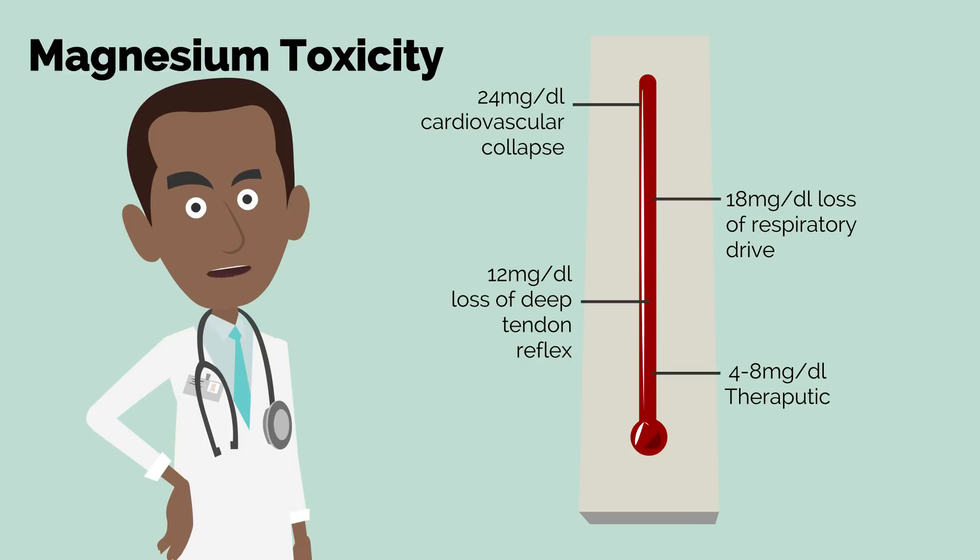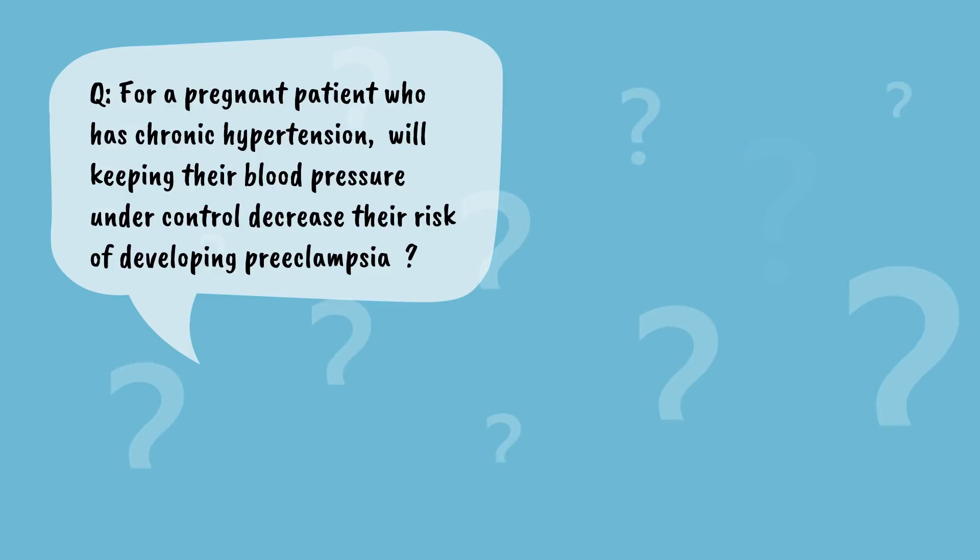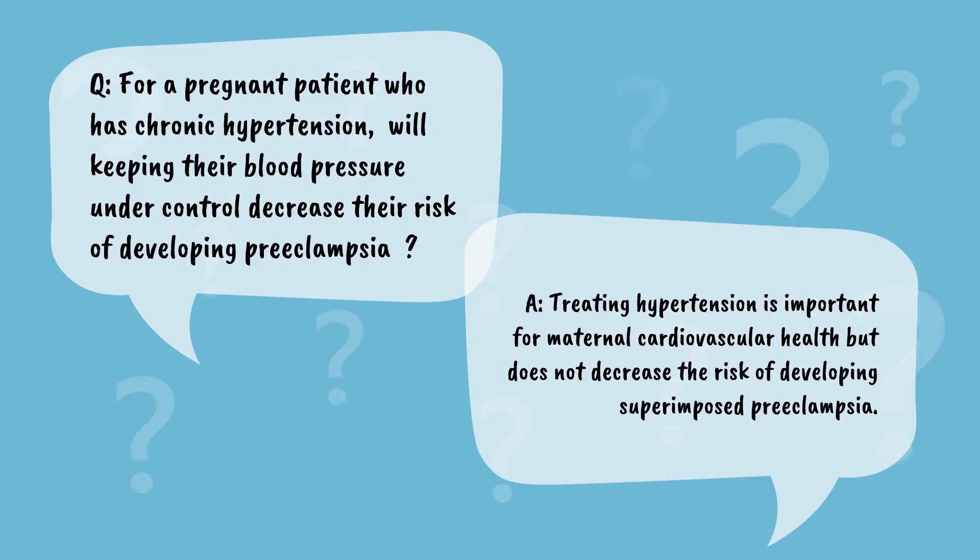Initially, there is a loss of patellar deep tendon reflexes when serum levels reach around 10 mg per deciliter. This is followed by weakness, double vision, and dysarthria. Finally, respiratory depression or arrest can occur when levels reach over 14 mg per deciliter. Let's pause, think, and apply. For a pregnant patient who has chronic hypertension, will keeping their blood pressure under control decrease their risk of developing preeclampsia? Treating hypertension is important for maternal cardiovascular health, but does not decrease the risk of developing superimposed preeclampsia.